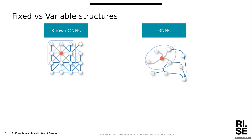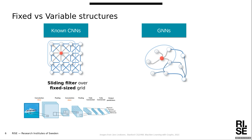On the screen you see on the left a known convolutional neural network (CNN) from the deep learning domain, and on the right a graph representation. In CNNs, convolutions work like a sliding filter placed on the image and slid through the fixed-size grid, computing an output for each location. But with graphs, we have a variable-sized grid that may change over time. So how can we design such a sliding filter for graphs?